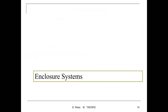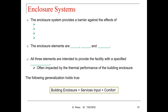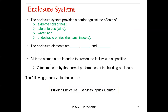The next topic is the enclosure system. The enclosure system provides a barrier against the effects of extreme cold or heat, lateral forces like the wind, water, and undesirable entries like humans and insects. The enclosure elements are floor, walls, and the roof — all three elements are intended to provide the facility with a specified comfort level, and this is often impacted by the thermal performance of the building enclosure. The following generalization holds true: the building enclosure plus the service input equals comfort.